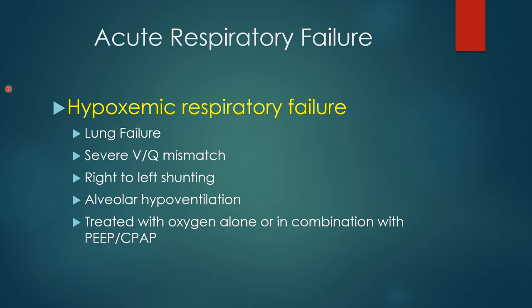When a patient needs intubation due to severe atelectasis, it's usually from ARDS — acute respiratory distress syndrome. In ARDS, the lung loses surfactant, which becomes dysfunctional in a large percentage of the lung. Two-thirds to three-fourths of the lung can be collapsed with ARDS, creating severe shunting. Alveolar hypoventilation also worsens oxygenation — the higher the CO2 in the alveoli, the lower the O2. Airway obstruction prevents oxygen from reaching alveoli distal to the obstruction.